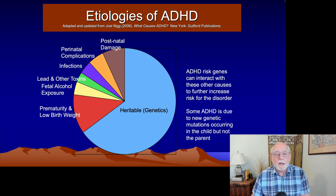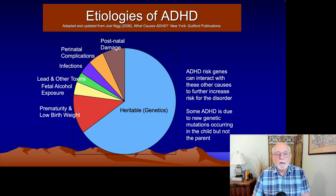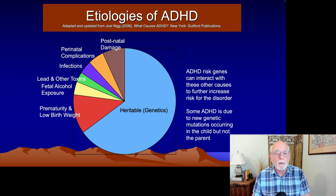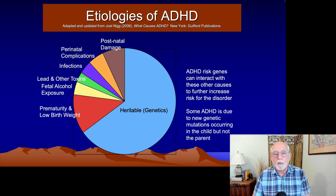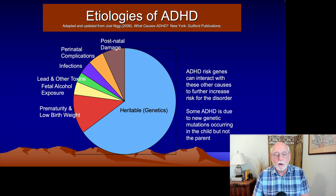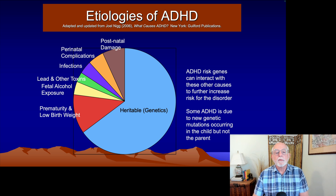ADHD has a number of causes or etiologies. Borrowing a graph from Joel Nigg's book, it shows a variety of causes for ADHD, the most common of which is genetics — particularly inheritance of genes for ADHD. Also, one can have new or de novo mutations that occur in a child, not present in the parent's DNA except in their eggs and sperm. It's estimated that upwards of about 10% of all ADHD cases are these de novo cases. About two-thirds to 70% of ADHD results from genetics.